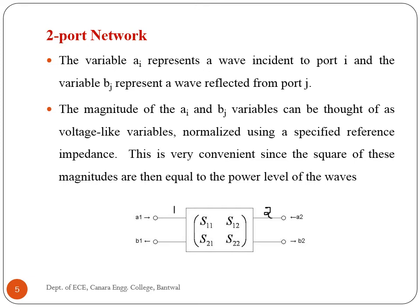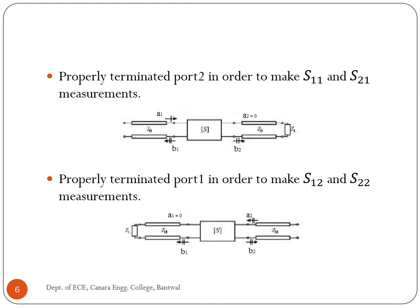S-Parameters don't mean much unless we know the value of the reference impedance. We can measure S11 and S21 when the load impedance equals the line impedance Z0. To measure S11, we inject a signal at port 1 and measure its reflected signal with no signal injected into port 2. For S21, we inject a signal at port 1 and measure the resulting signal power leaving port 2.